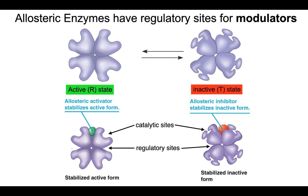Allosteric proteins are proteins that are capable of existing in two different states: an active conformation or active state, and an inactive conformation or inactive state. Sometimes you'll see the term R state and T state. Furthermore, many of these allosteric enzymes have multiple subunits, meaning they are made up of more than one polypeptide chain.